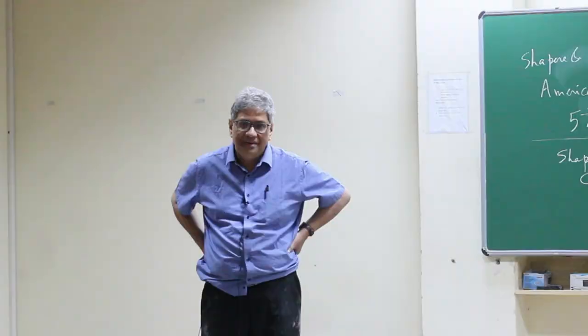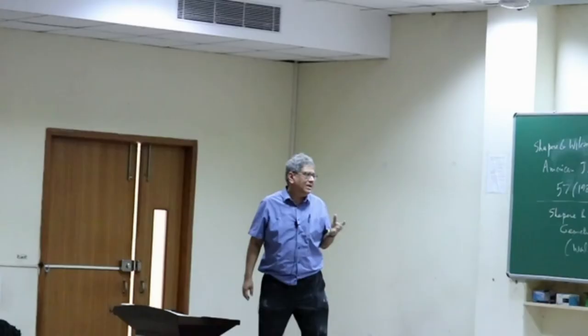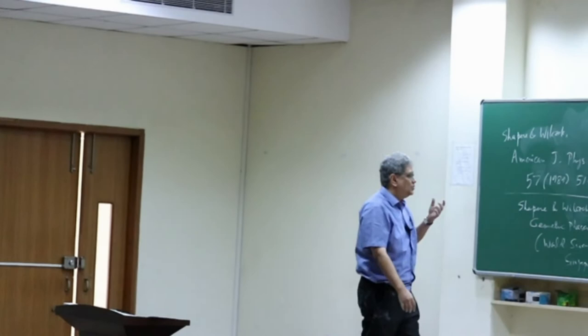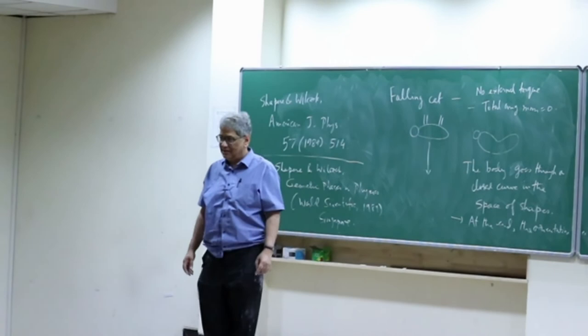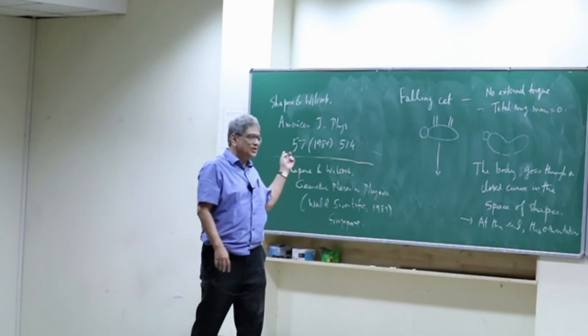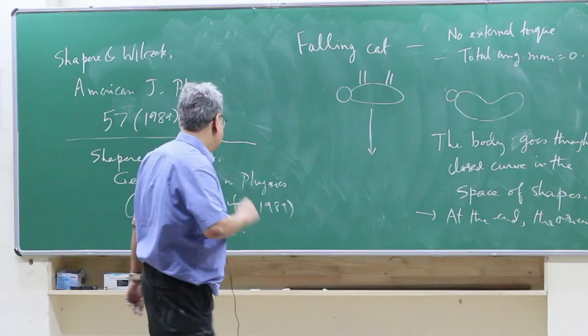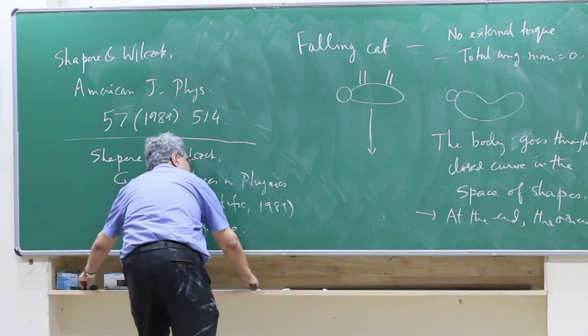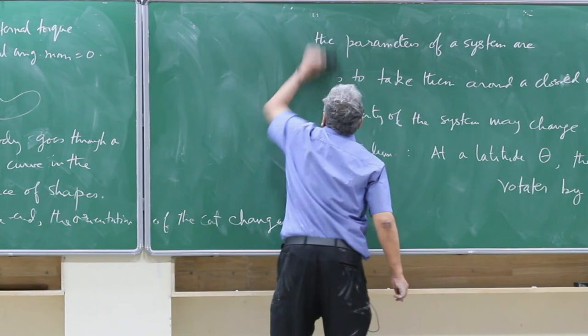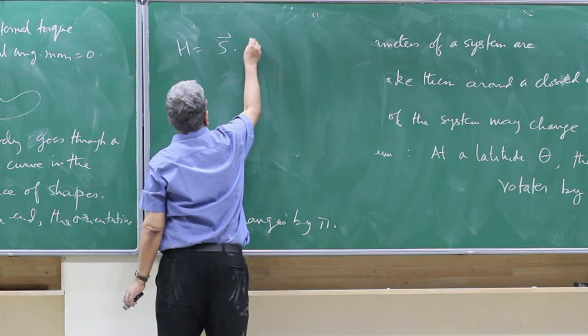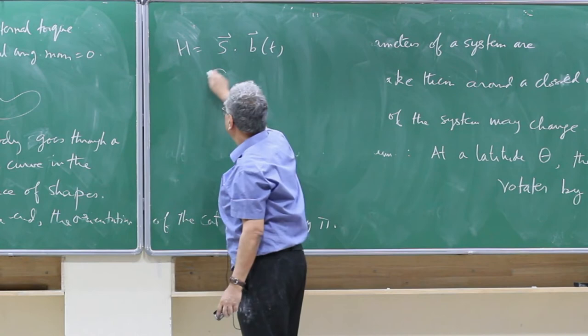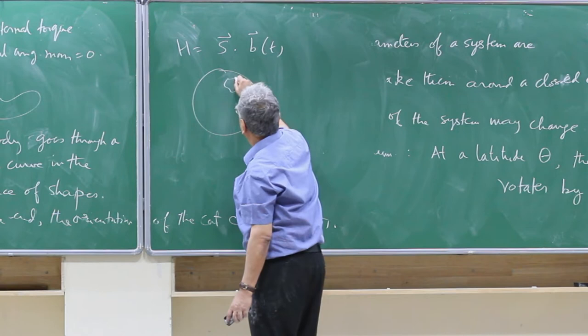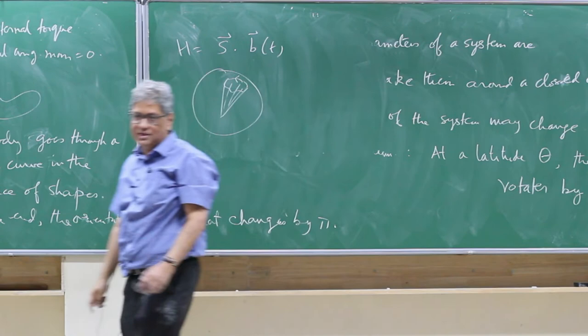Q&A: If it is spinless, the wave function is a single component. For spin S, it has 2S+1 components; if S is not 1, you cannot directly identify them with x, y, z. The solid angle is for the vector B(t), not for the spin. The Hamiltonian is S·B(t), and we follow the direction of B as it traces a closed curve enclosing some solid angle — so the solid angle refers to B.